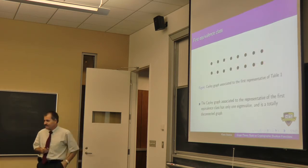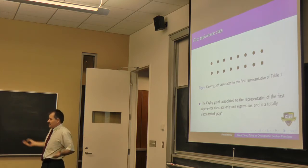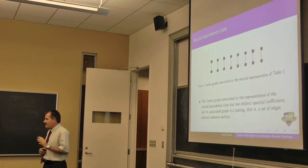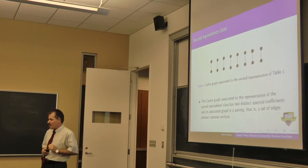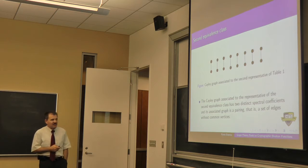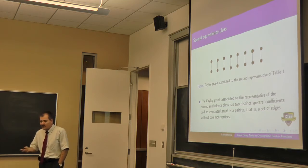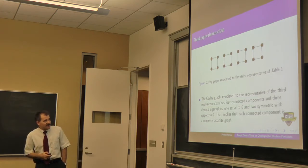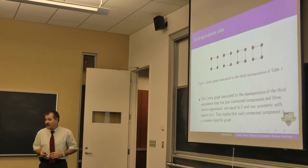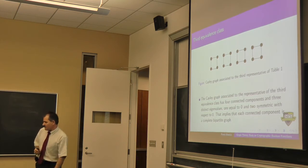The first class gives a completely disconnected graph — it's the zero function, with only one eigenvalue. The second representative has two distinct spectral coefficients and is a collection of disconnected edges — a pairing. The third representative gives a square (cube in two dimensions) with four connected components and three distinct eigenvalues, one of which is zero with a symmetric spectrum.